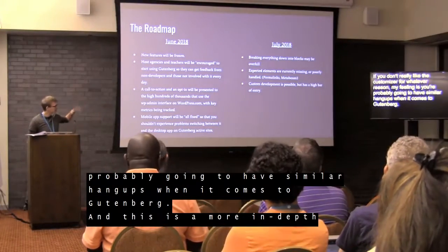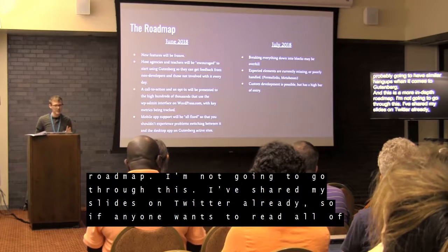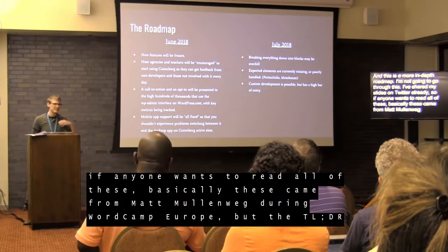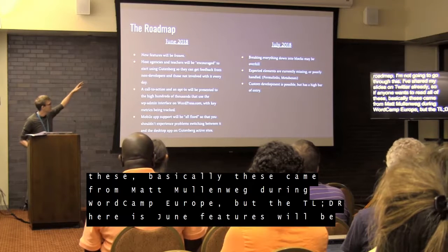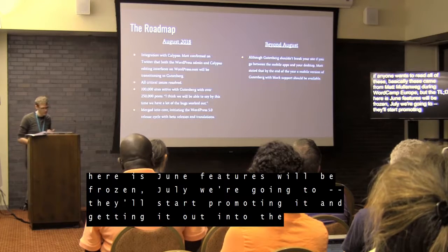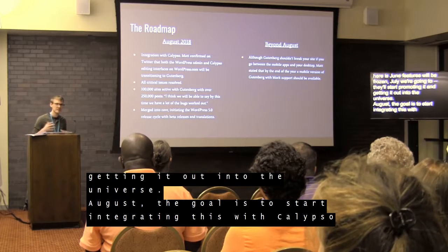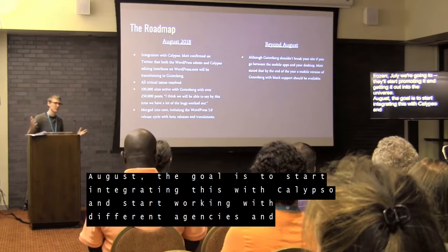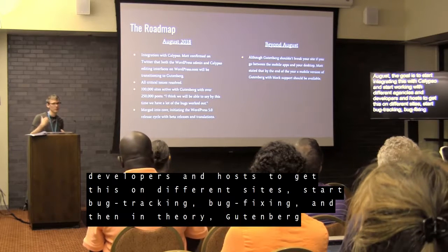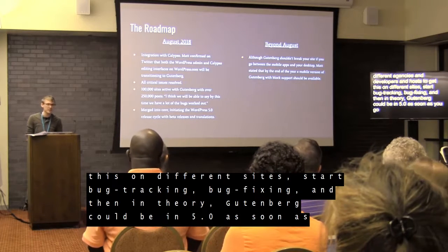This is a more in-depth roadmap — I'm not going to go through all of it, but I've shared my slides on Twitter already. These came from Matt Mullenweg during WordCamp Europe. The TLDR: in June, features will be frozen; in July, they'll start promoting it; in August, the goal is to integrate it with Calypso and work with agencies, developers, and hosts to get it on sites, start bug-tracking and bug-fixing. In theory, Gutenberg could be in WordPress 5.0 as soon as August, though that goal may have changed.